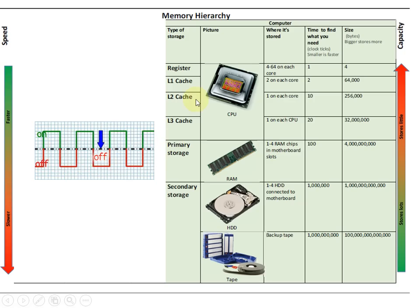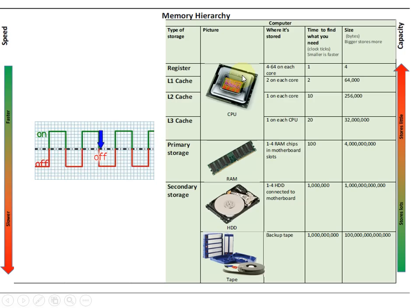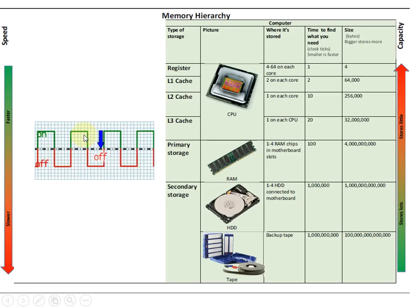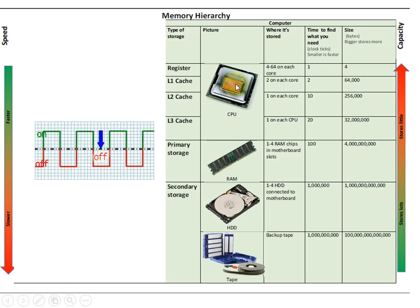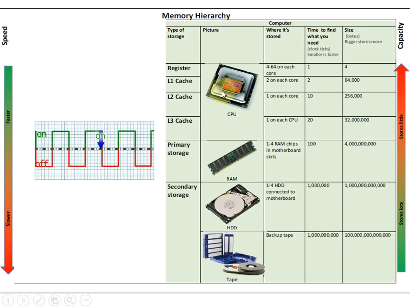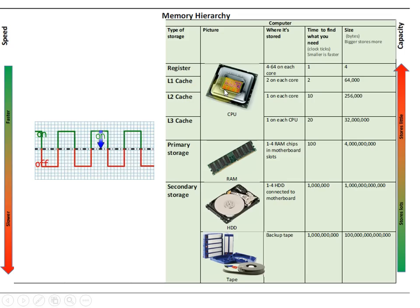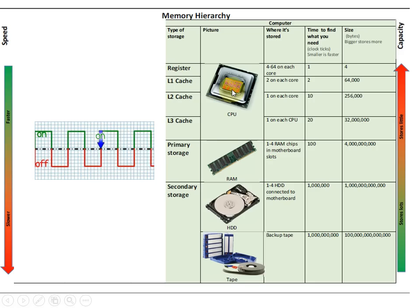So if a CPU follows instructions and is controlled by this clock speed, we need to make sure that it can read all the instructions in its program as fast as possible, and that it can save the data sent out from the program as quickly as possible.